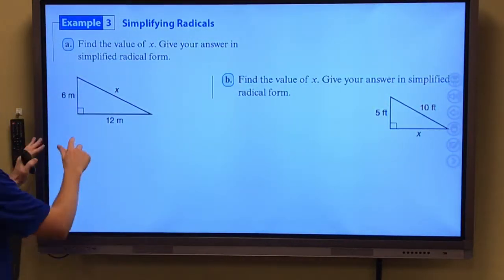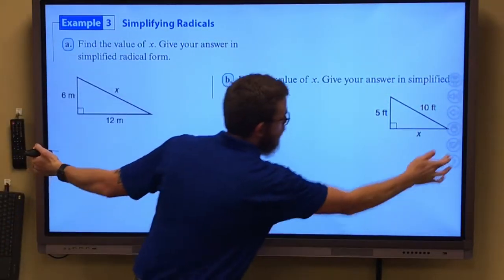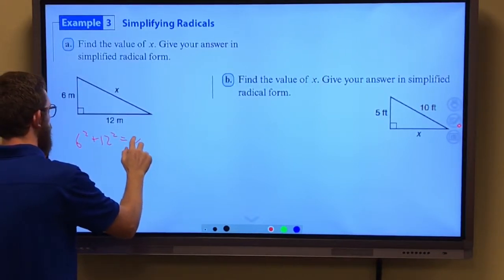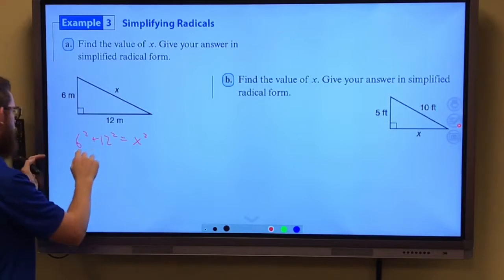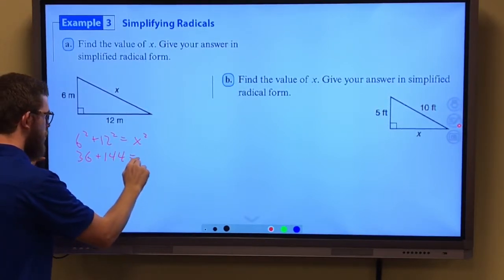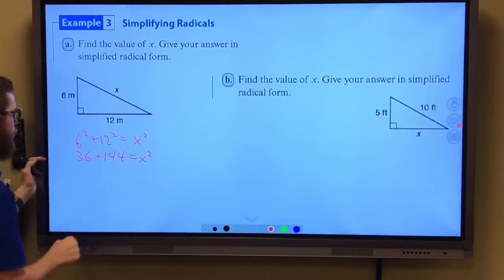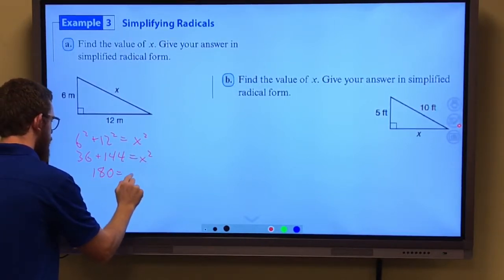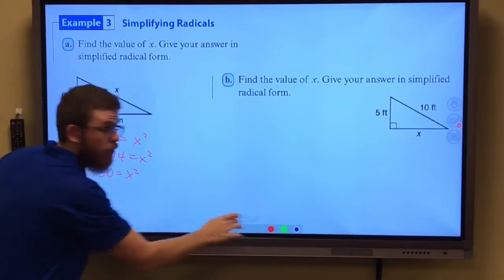I can use Pythagorean Theorem. 6 squared plus 12 squared equals x squared. This is 36 plus 144 equals x squared. 36 plus 144 gives me 180.